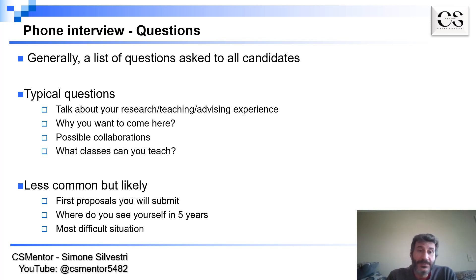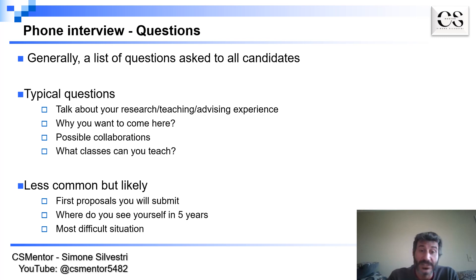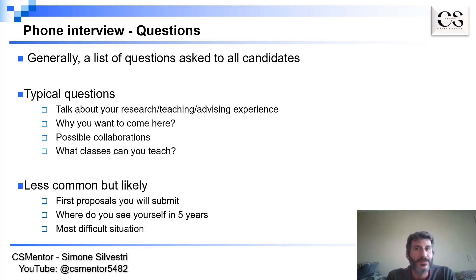Typical questions that are going to be asked are, for example, to talk about your research, your teaching, and your advising experience. "Why do you want to come here?" is a very common question that comes up all the time. Also, what are possible collaborations that you can have with our department? What are the classes that you can teach? What is the first proposal you're going to submit after you join? Where do you see yourself in five years — approaching the end of the tenure track? And they may also ask, what is the most difficult situation that you have found yourself in?